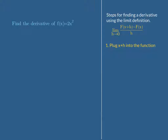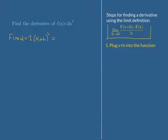Let's find the derivative of f of x equals 2 times x squared. The first step is to plug x plus h into the function. So I want to find f of x plus h. If we plug that in, we get 2 times x plus h squared. You will want to foil that all the way out — foil x plus h squared and then multiply the 2 through. You would get 2x squared plus 4xh plus 2h squared.